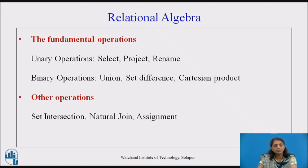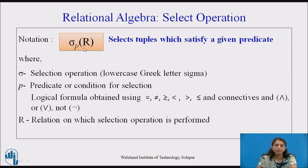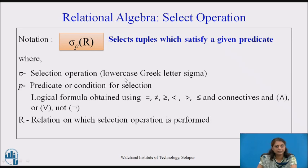Other operations include set intersection, natural join, assignment, and so on. Now we will see the select operation. The notation is: sigma subscript p of relation r, meaning select tuples which satisfy a given predicate. The selection operation is denoted by the lowercase Greek letter sigma.